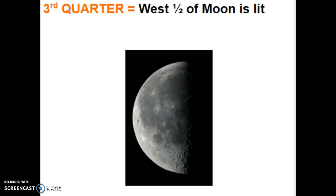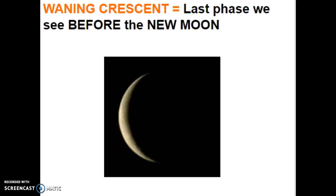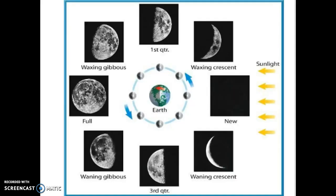Then we hit the third quarter because we're three quarters of the way through the whole cycle — in the third quarter, the west half of the Moon is lit. Finally, we have the waning crescent, the last phase before the new Moon. So in order: new Moon, waxing crescent, first quarter, waxing gibbous, full, waning gibbous, third quarter, and waning crescent. Sunlight always comes from the east.